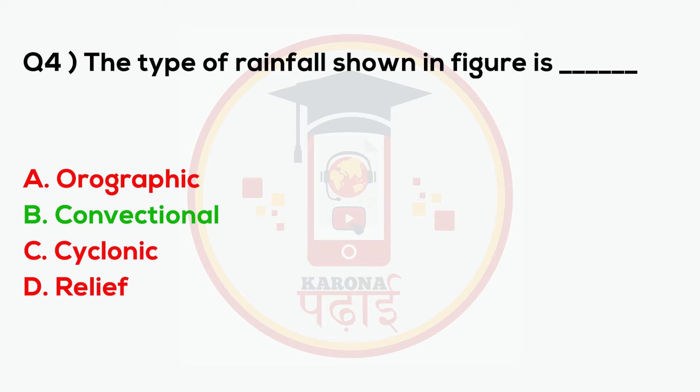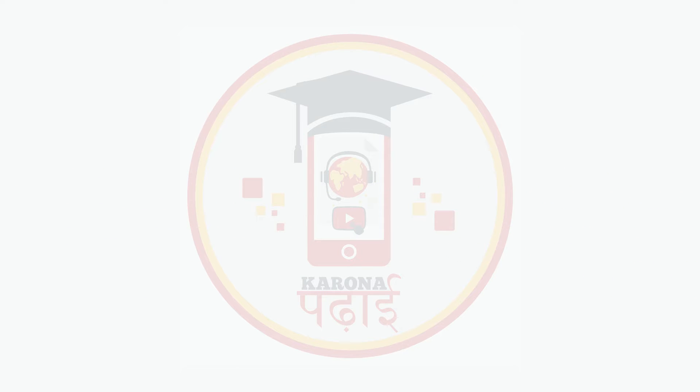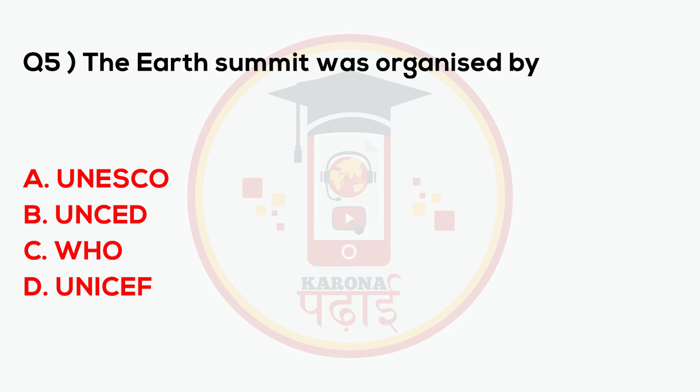The type of rainfall shown is Convectional. The Earth Summit was organized by whom?